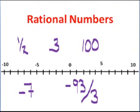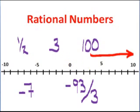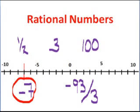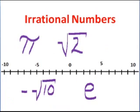Rational numbers, like 1 half, 3, 100, negative 7, negative 93 thirds, they fit on the number line in different places. 100 doesn't show here, and negative 7 is there, and negative 93 thirds is the same thing as negative 31, and it wouldn't show on the number line either.